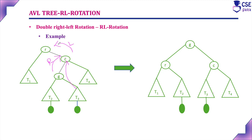Performing the left rotation: G becomes the root node and R becomes the left subtree. The left subtree of G is attached as the right subtree of R. This is RL rotation — double right left rotation. This is the new balanced tree we obtain, and it is an AVL tree.